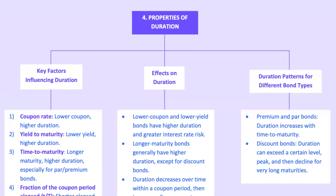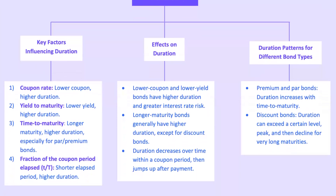Now we're getting into the nitty-gritty of duration — a key concept in bond investing that's all about measuring a bond's sensitivity to interest rate changes. You might think duration is just one number that tells you everything about interest rate risk, but there's a bit more to it. Duration is like a compass for bond investors: it points you in the right direction by showing how a bond will react to changes in interest rates. Let's dive into the key properties of duration and the four key factors that influence Macaulay duration and related measures like modified duration.